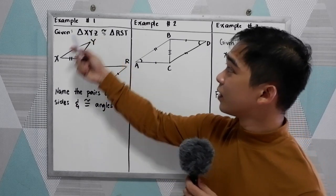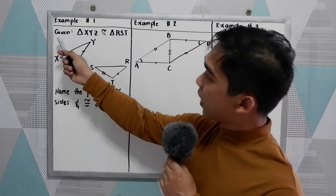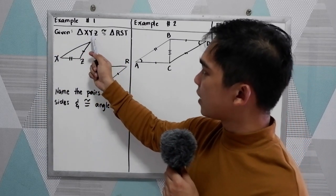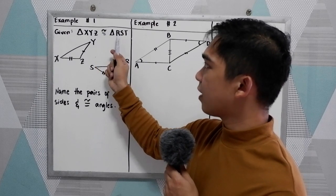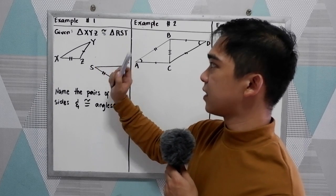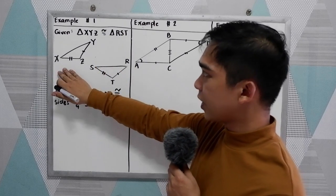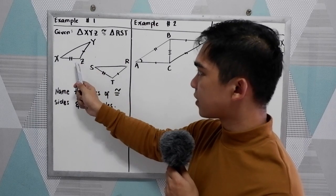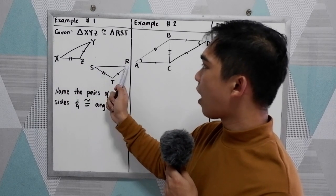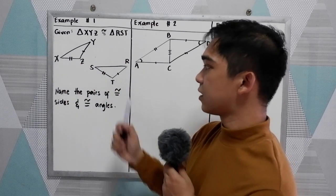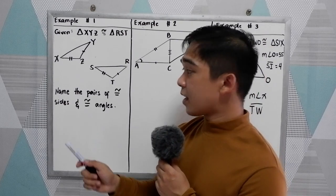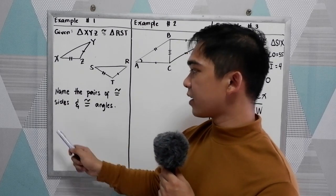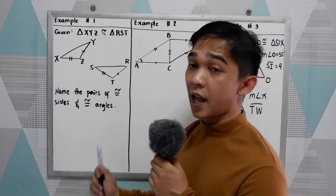Example number one. We have the given: triangle XYZ is congruent to triangle RST. We have our illustration here showing triangle XYZ and triangle RST. Now, name the pairs of congruent sides and congruent angles.